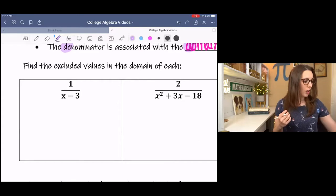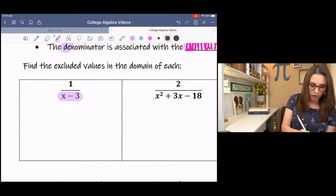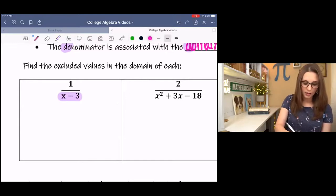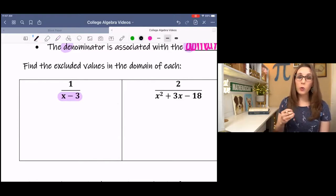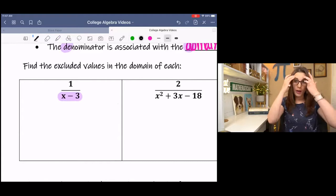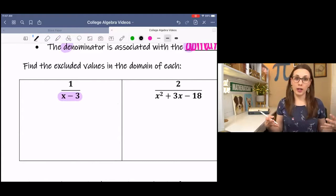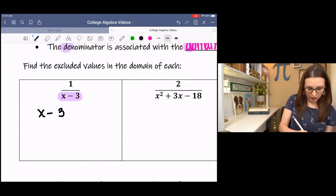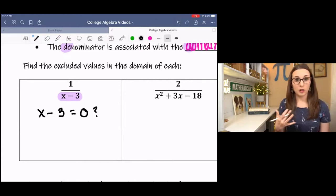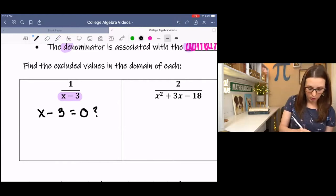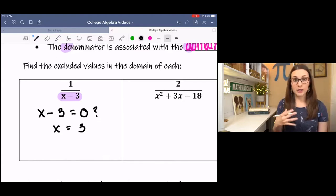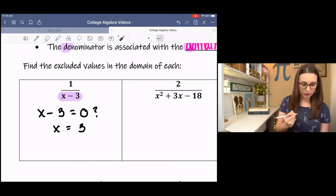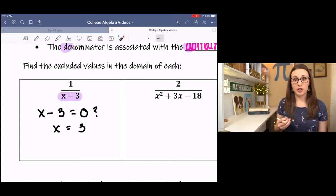So the first example, we are just stating the excluded values of the domain. Now what we know about domain is that it's associated with the denominator. So what happens is the denominator, if it were to equal 0, we would have an undefined point in our graph. So we need to figure out where that is. Where does x minus 3 equal 0 is basically what we're asking ourselves. So we would add 3 and at x equals 3, the function is undefined. If I were to plug in 3, 3 minus 3 is 0. 1 over 0 is undefined.